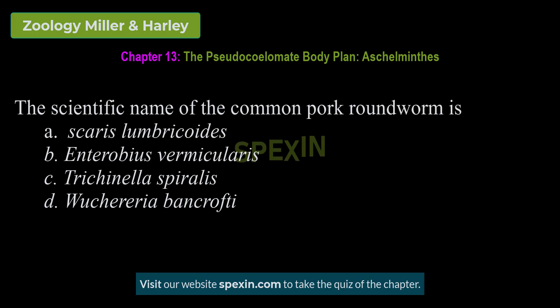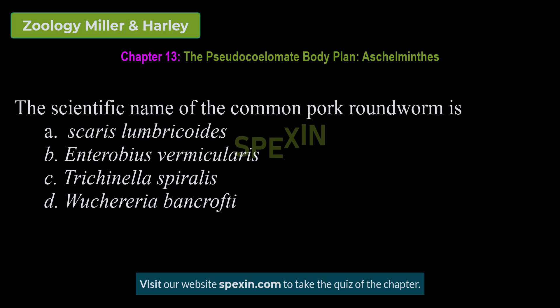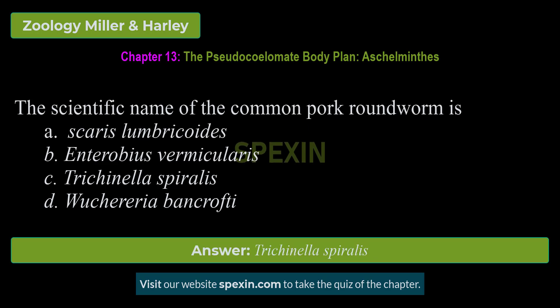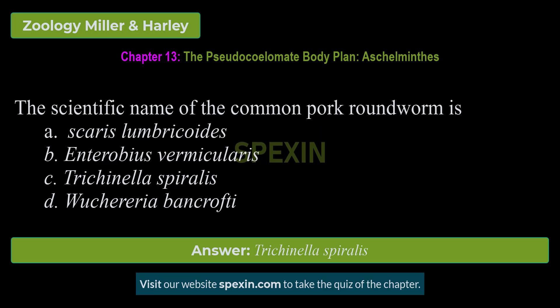The scientific name of the common pork roundworm is: A. Ascaris lumbricoides. B. Enterobius vermicularis. C. Trichinella spiralis. D. Wuchereria bancrofti. Correct answer: Trichinella spiralis.